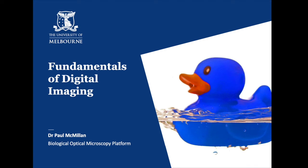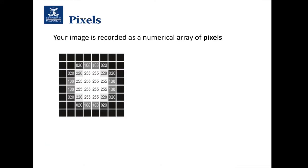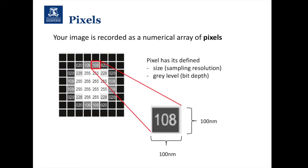Let's go through the fundamentals of digital imaging. First of all, what is a digital image? Our image is being recorded as a numerical array of pixels. So though we're seeing an image, it's actually essentially an Excel spreadsheet. Each pixel has two different characteristics: first is its size, or its equivalent size in the image — in this example the pixel has a size of 100 nanometers — and we also have a gray level, which is our intensity value, in this case 108.